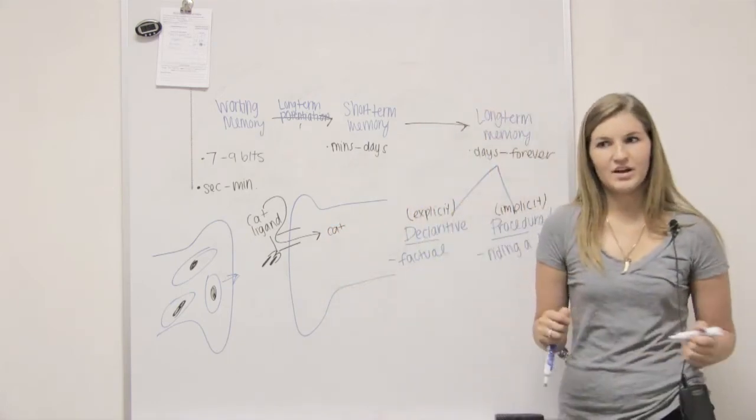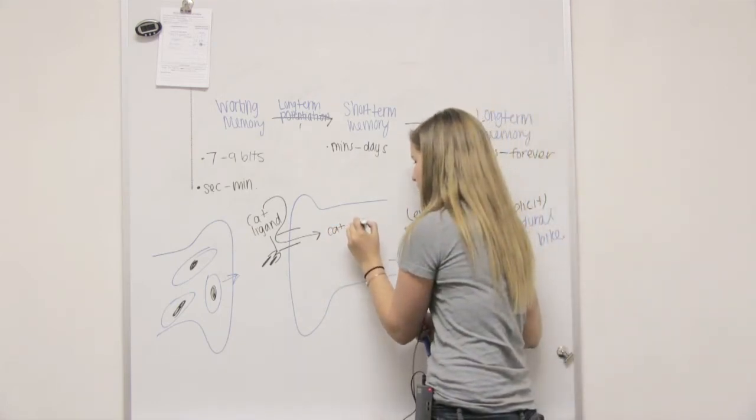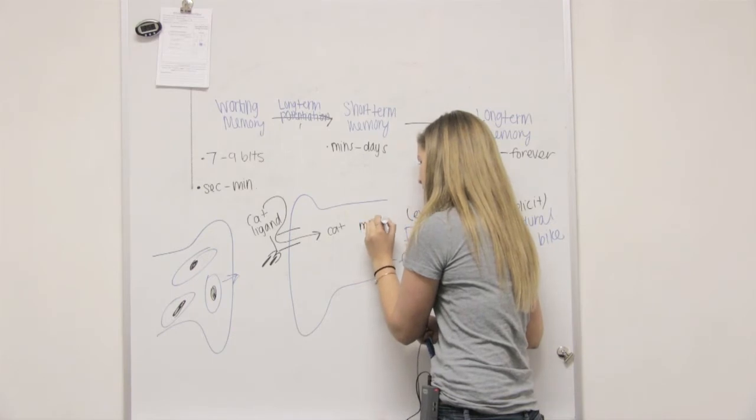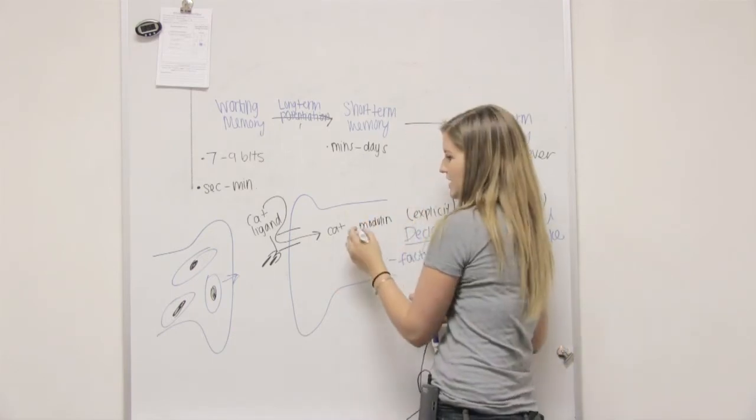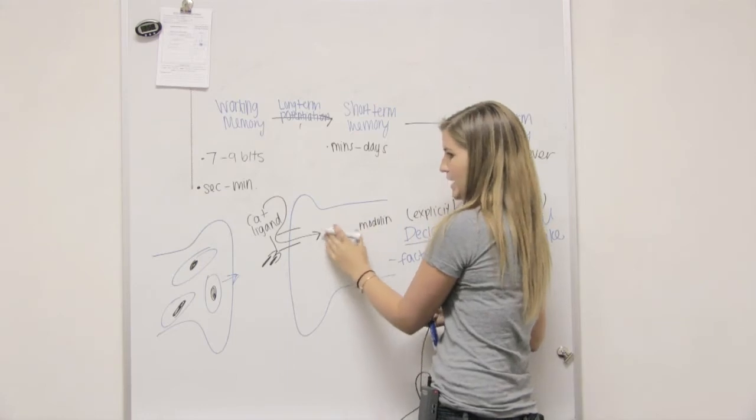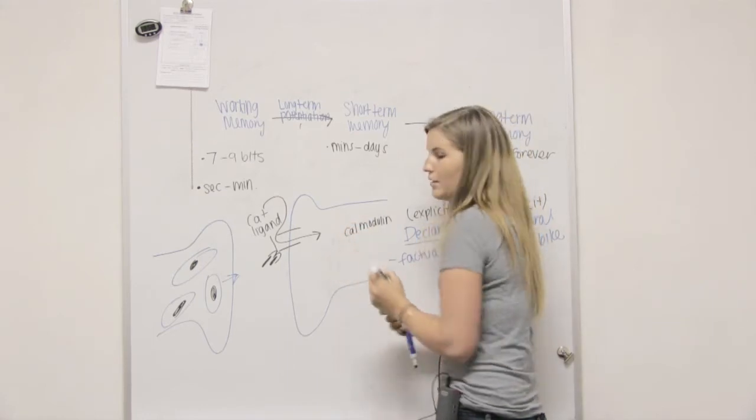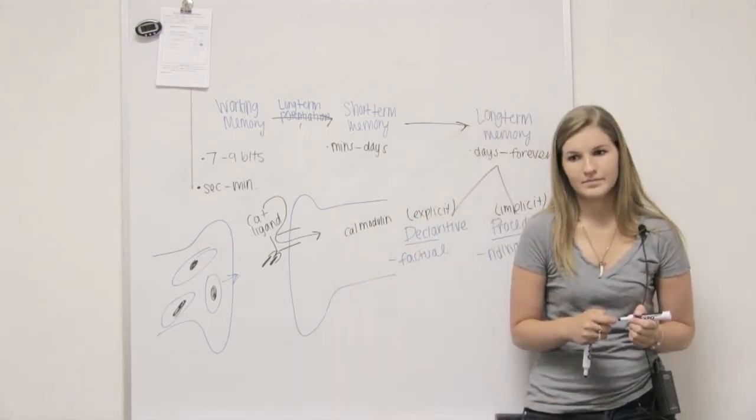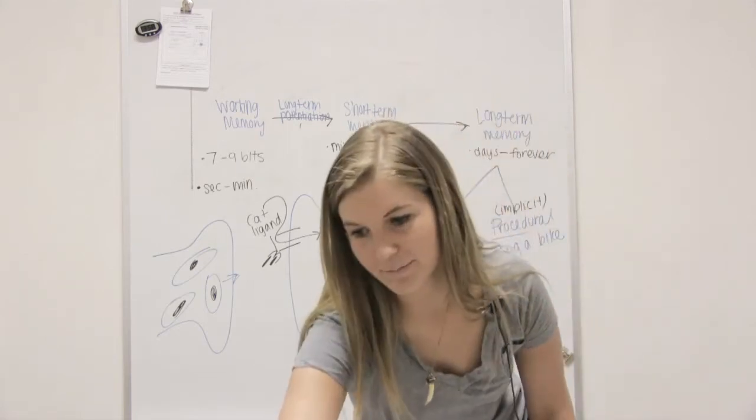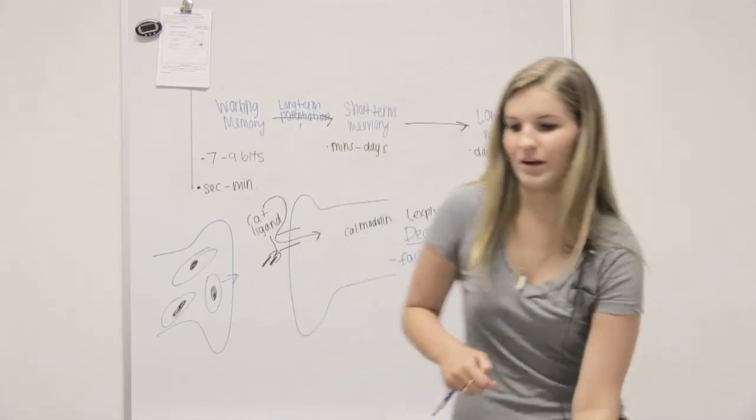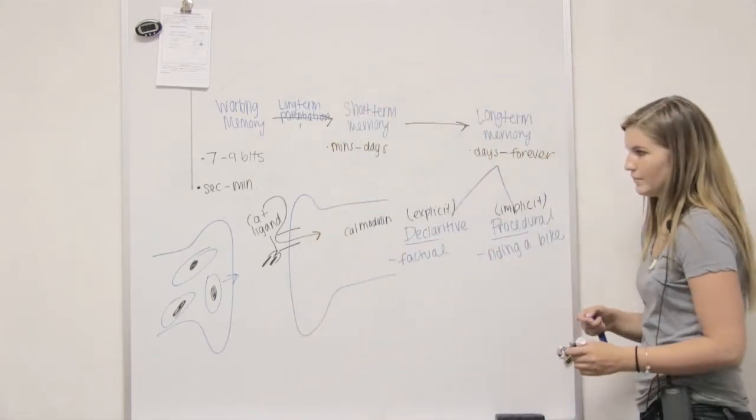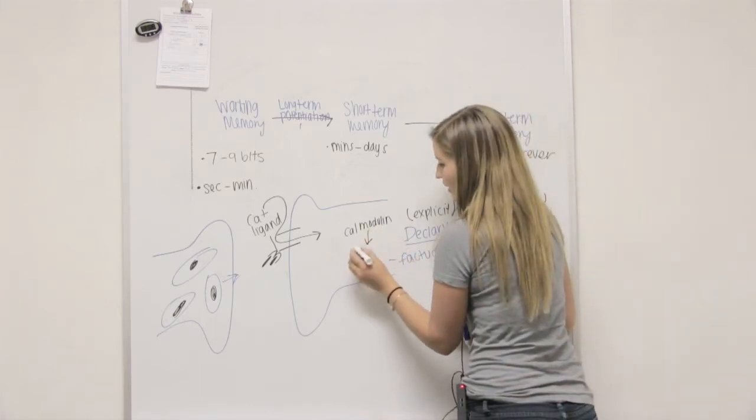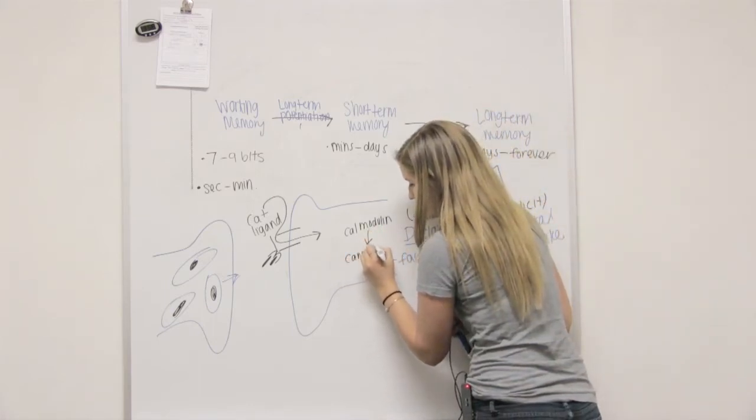Calcium needs a friend called modulin. Calmodulin. And kind of binds with it. So now we call it, instead of calcium and modulin, calmodulin. That's a picture on page 498. Calmodulin is then going to go activate cam kinase.